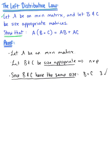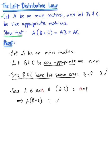We can also observe that since matrix A is M by N, and matrix B plus matrix C is N by P, the number of columns of the first matrix is equal to the number of rows of our second matrix. Therefore, matrix multiplication exists, and we can know that matrix A multiplied by matrix B plus C exists.